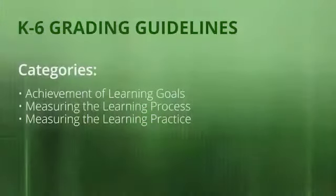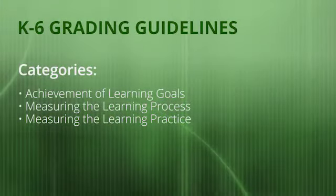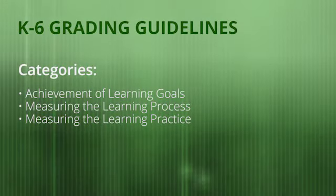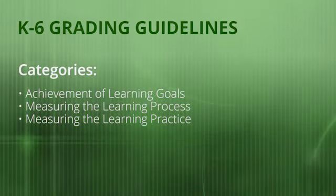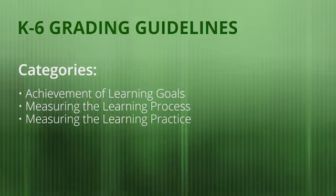The grading guidelines for kindergarten through sixth grade are broken up into three main categories: achievement of learning goals, measuring the learning process, and measuring the learning practice.